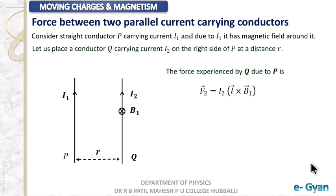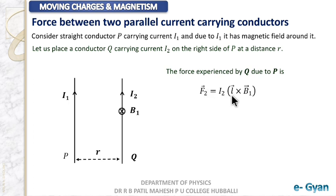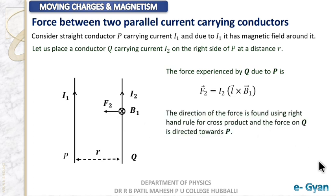That force will be given by the formula F2 = I2 × (L × B1), where L is the length of conductor Q and its direction is along I2. To find the direction of force, we apply the cross product rule L × B, and the force direction comes out towards conductor P.